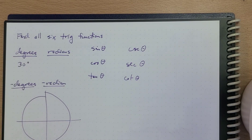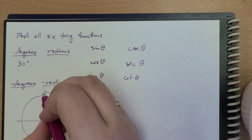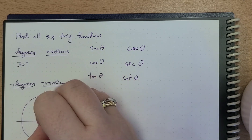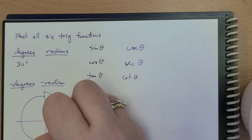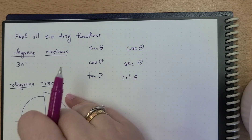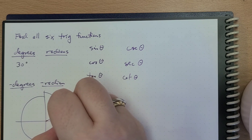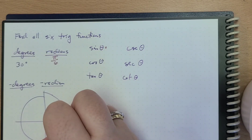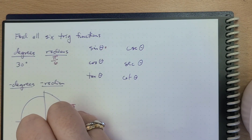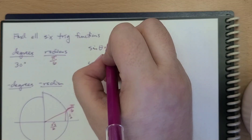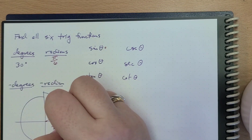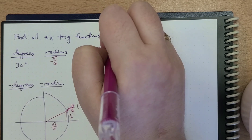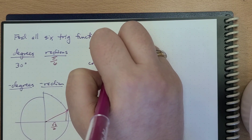Here we are asked to find all six trig functions. We're given 30 degrees. We know that 30 degrees is right here, which is the equivalent of π/6 radians. So the point is (√3/2, 1/2). Sine is going to be one half. Cosine is √3/2.